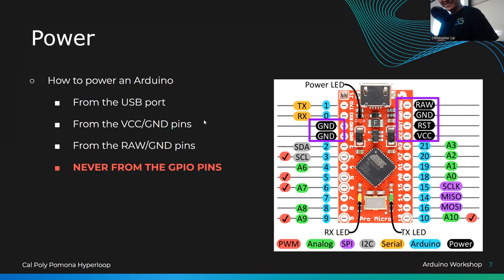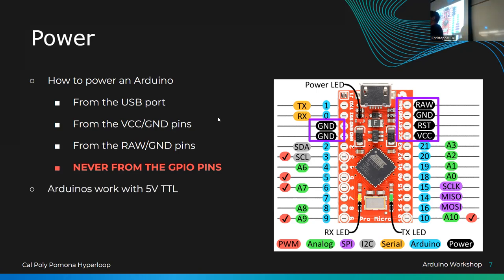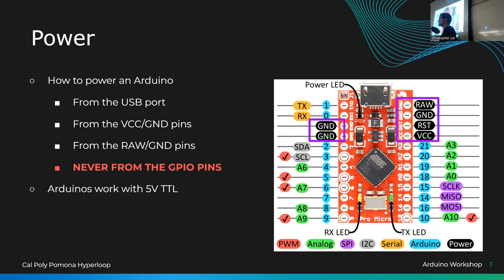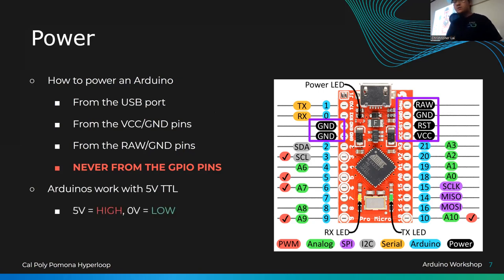Arduinos work with 5V TTL — Transistor-Transistor Logic — which refers to the voltage the board is comfortable working at and what it outputs from GPIO pins. Inputs and outputs will always be around 5 volts. Five volts is the HIGH signal and zero volts is the LOW signal. If you're trying to power something lower than 5 volts from a GPIO pin, you'll need to think of an alternative.